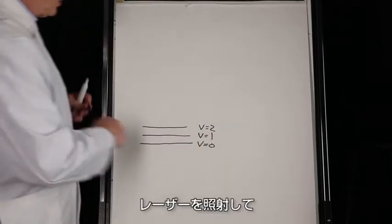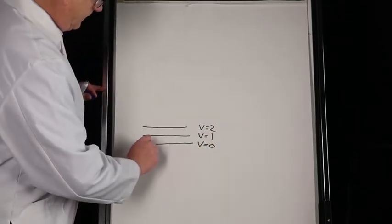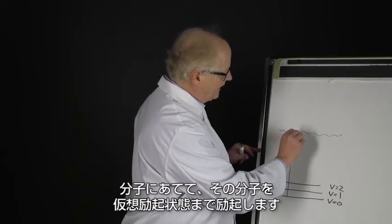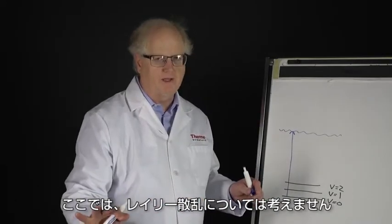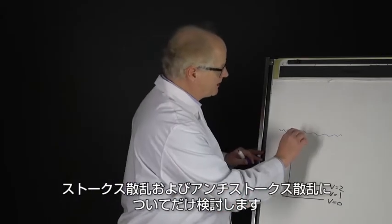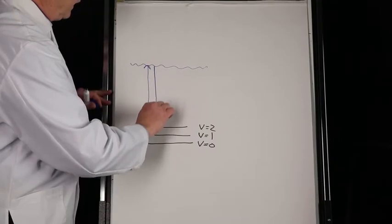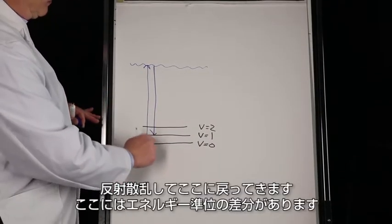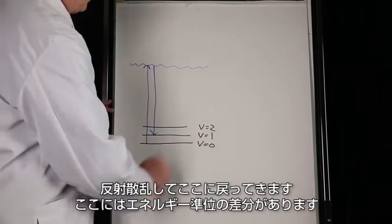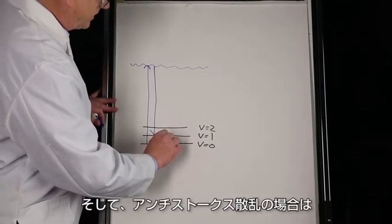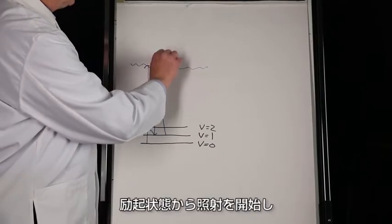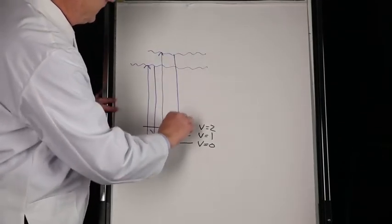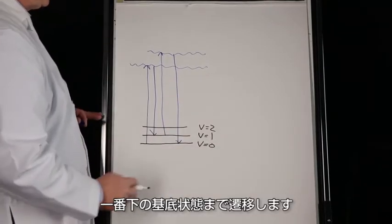We had the laser come in, strike the molecule, raise it to a virtual state. And I'm not going to worry about the Rayleigh scattering—we'll only look at Stokes and anti-Stokes. In the case of Stokes scattering, we come back here and we have the delta being that energy level there. And in the case of anti-Stokes, we started from the excited state and we come down all the way to the ground state.